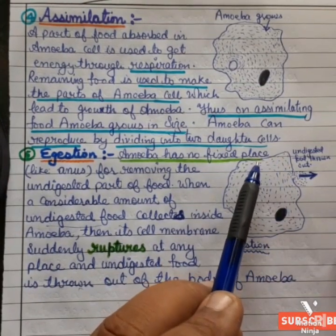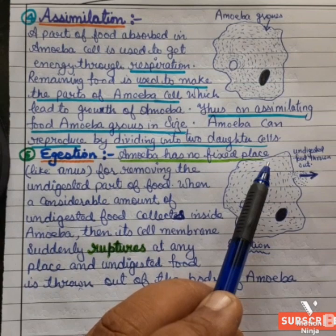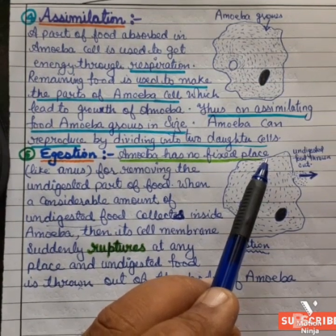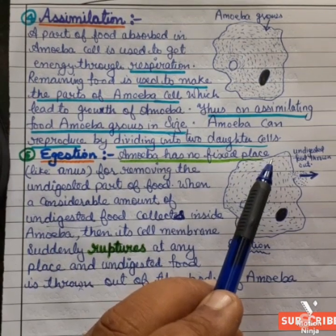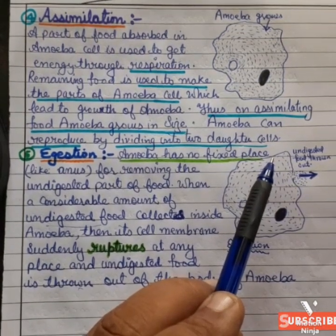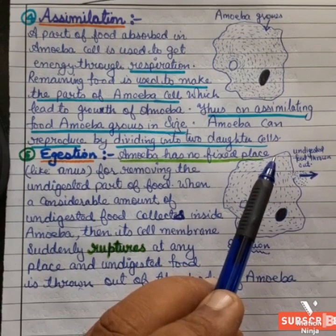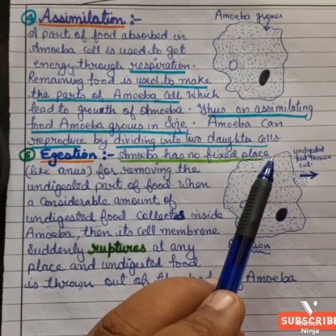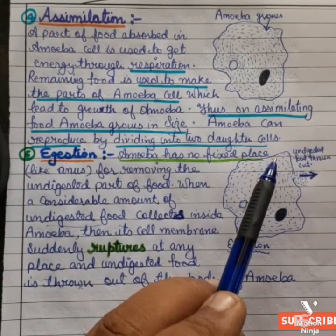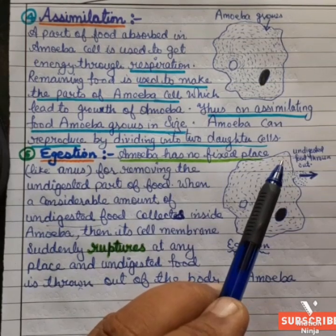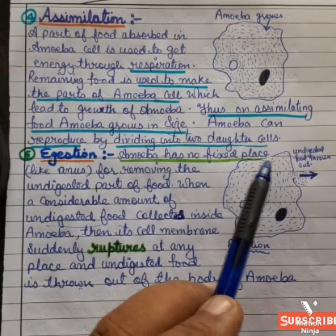These are the five steps necessary for nutrition in amoeba: first is ingestion, second is digestion, third is absorption, fourth is assimilation, and fifth is egestion — how food is taken inside through ingestion, then digested, assimilated, and finally ejected or removed out of the body of the amoeba.